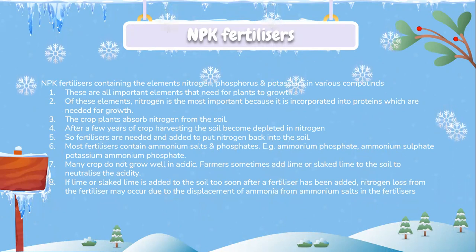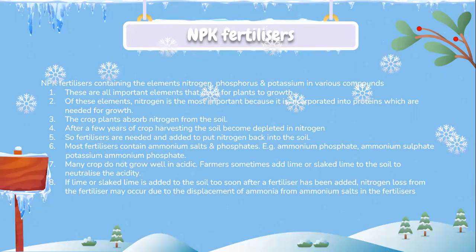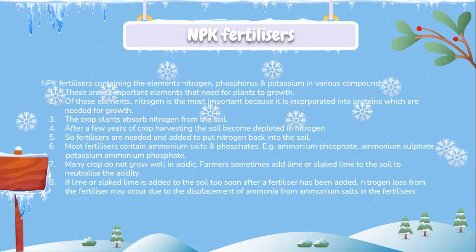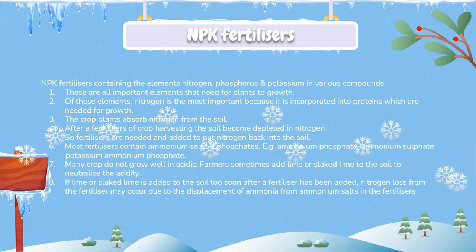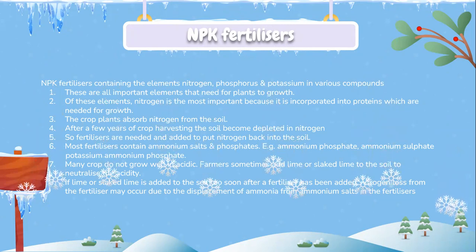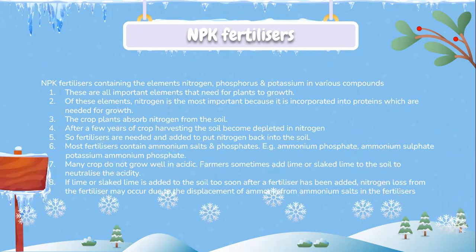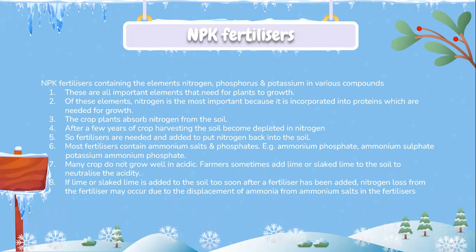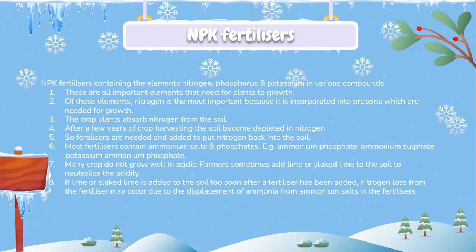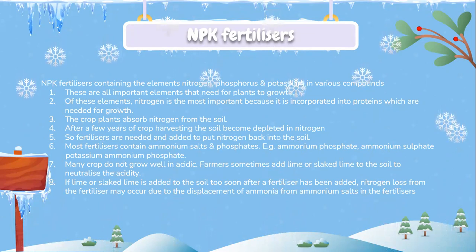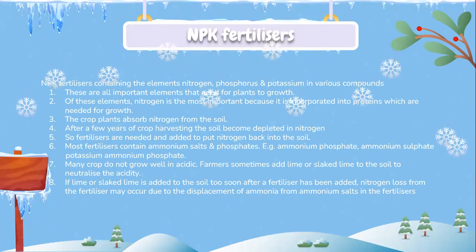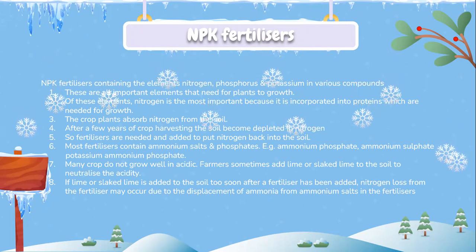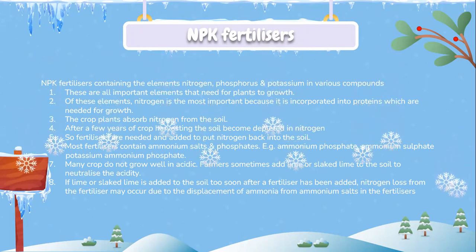Most fertilizers contain ammonium salts and phosphates — for example, ammonium phosphate, ammonium sulfate, and potassium ammonium phosphate. Many crops do not grow well in acidic conditions, so farmers sometimes add lime or slaked lime to the soil to neutralize the acidity. However, if lime or slaked lime is added to the soil too soon after a fertilizer has been added, nitrogen loss from the fertilizer may occur. This is because of the displacement of ammonia from ammonium salts in the fertilizer.